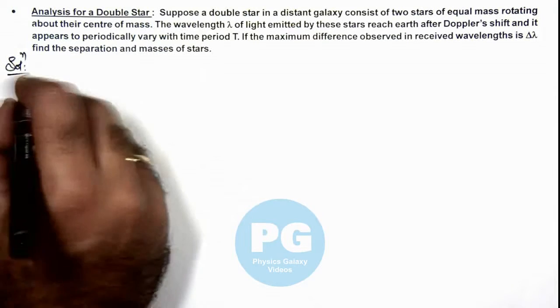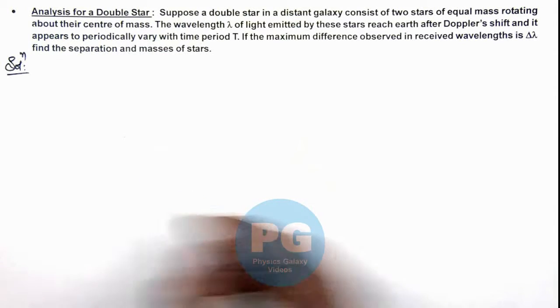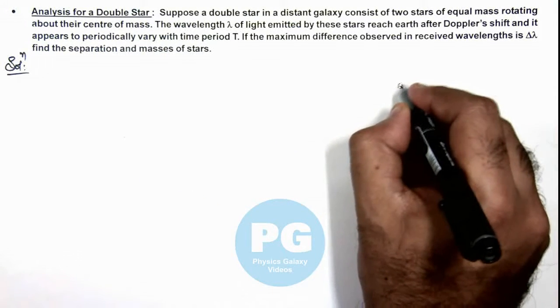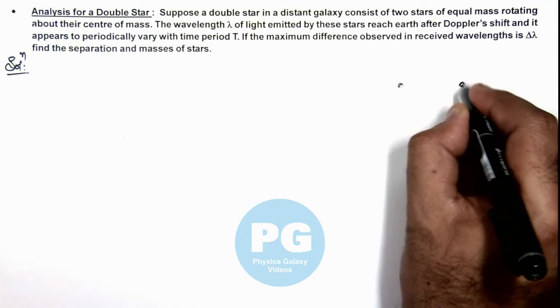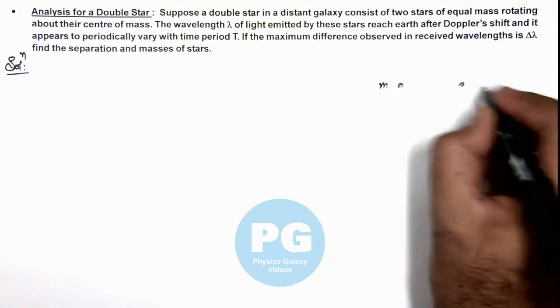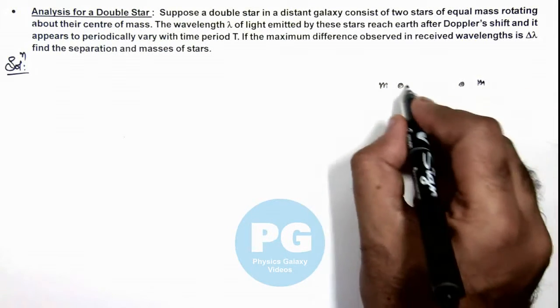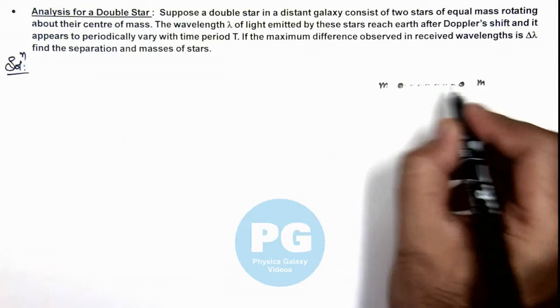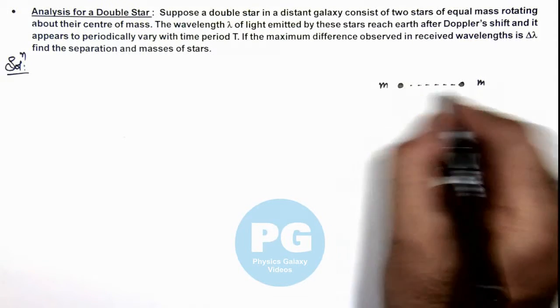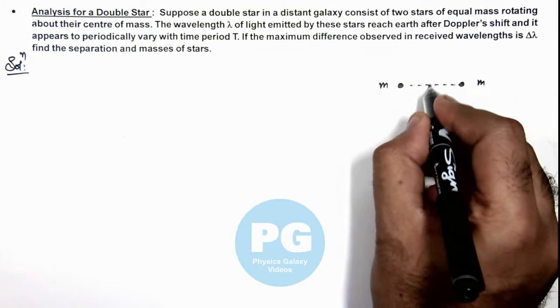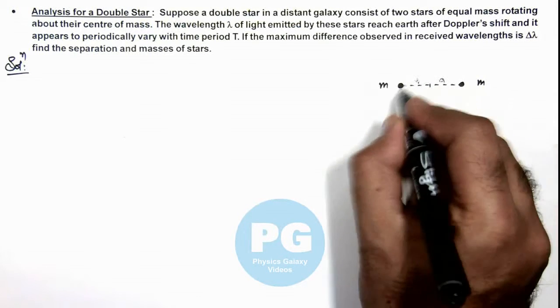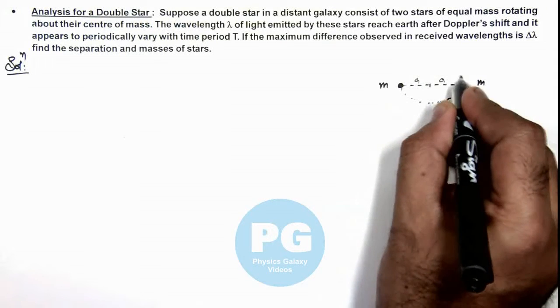To analyze this problem properly, let us first draw the picture. Say these are the 2 masses m each of a double star, separated by a distance 2a. If a is the radius of circle in which the double star would be revolving.